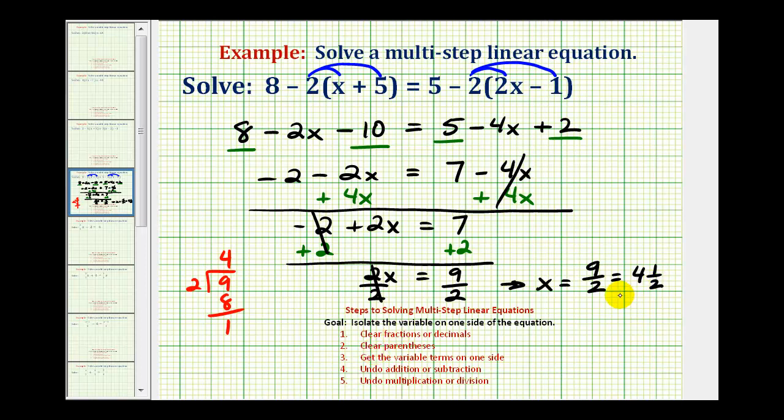If we wanted the decimal form of this answer, we could put a decimal here after the nine, move it up, add a zero here and bring it down. And there are five twos in ten, five times two is ten, subtract, that's zero. Showing we could also express this solution as four point five.